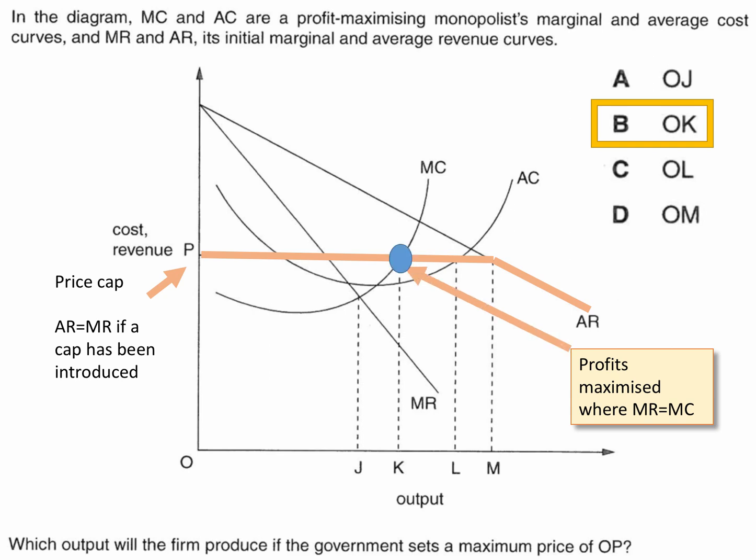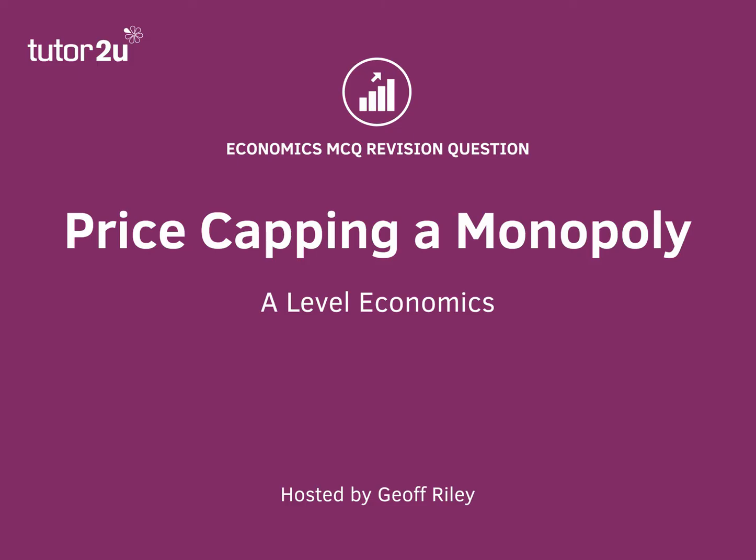The firm can still make a profit, though we're not asked to show this. The profit will be significantly lower than if it could set its own profit maximising price in the absence of regulation. So this is an interesting analysis question about how you price cap a monopoly.